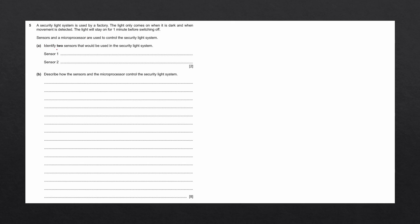Question A says, identify two sensors that would be used in the security light system. To answer this question, we can take a look at the initial paragraph. They tell us that the light is only going to come on when it is dark and when movement is detected.